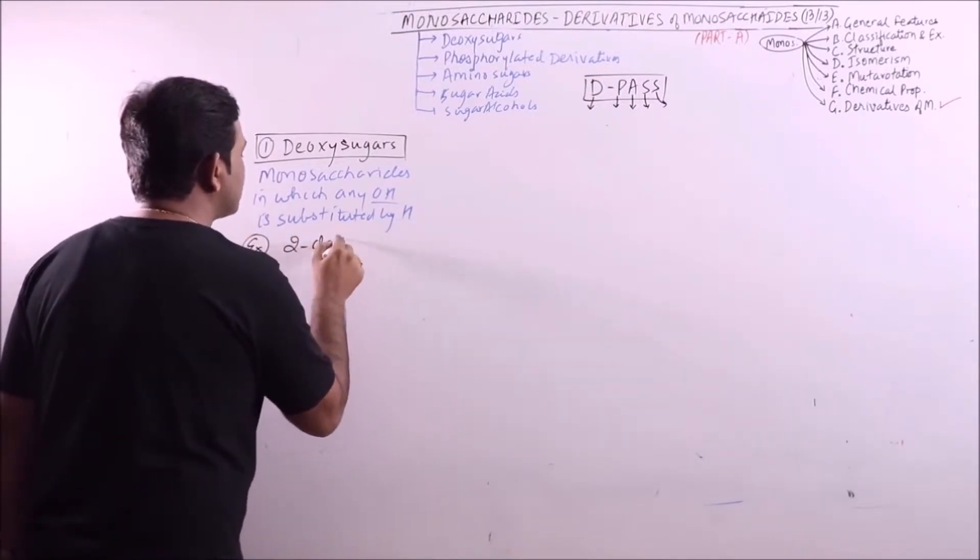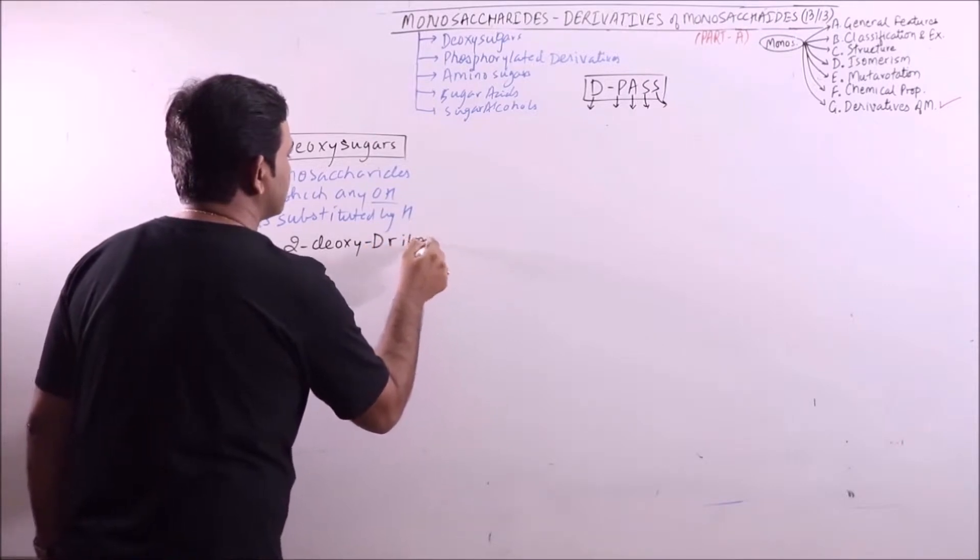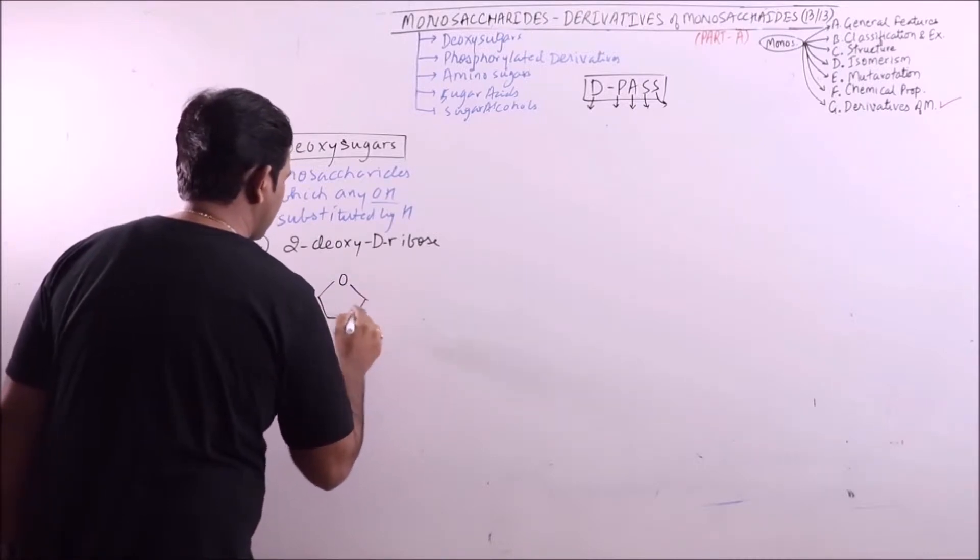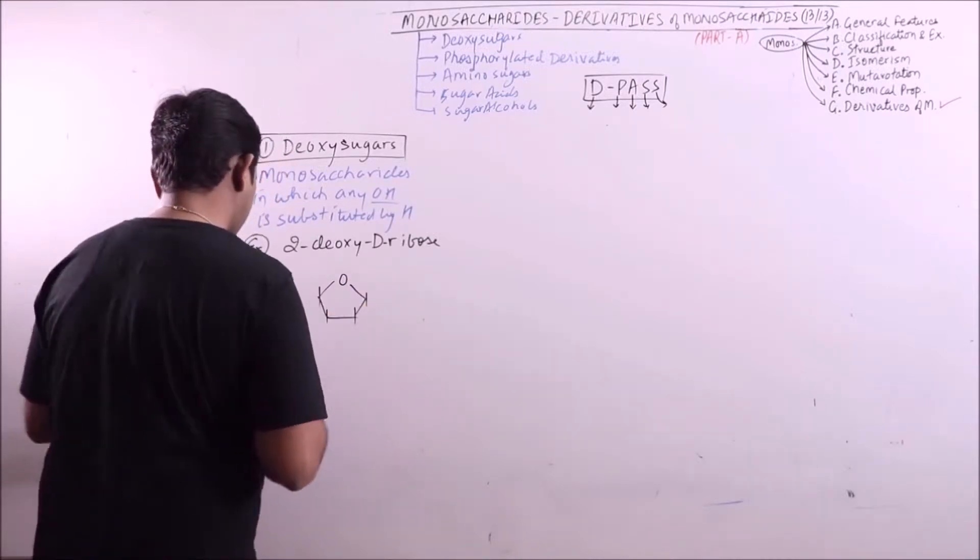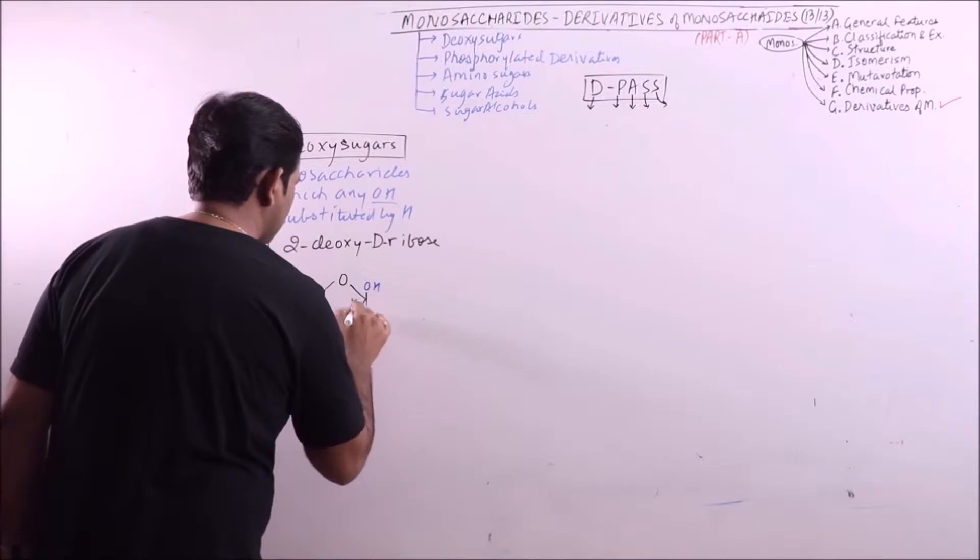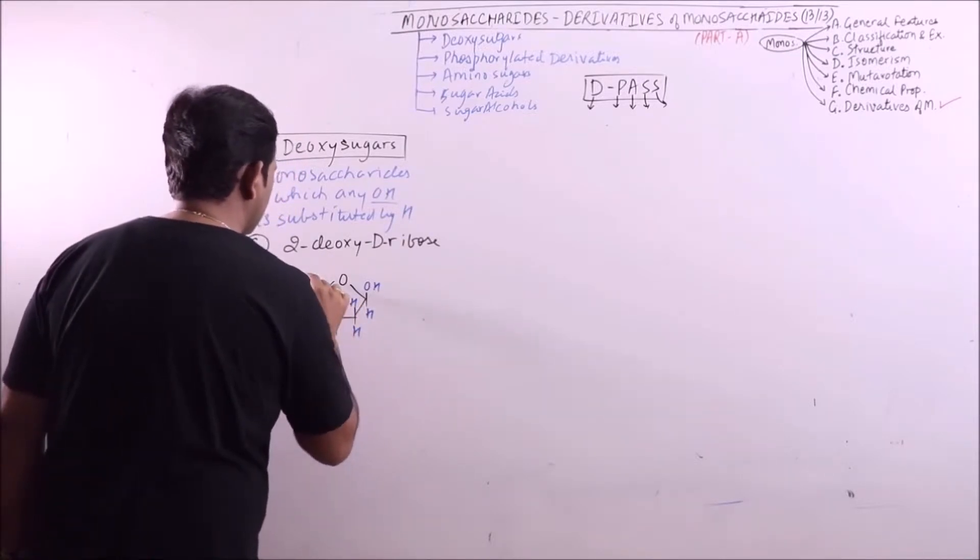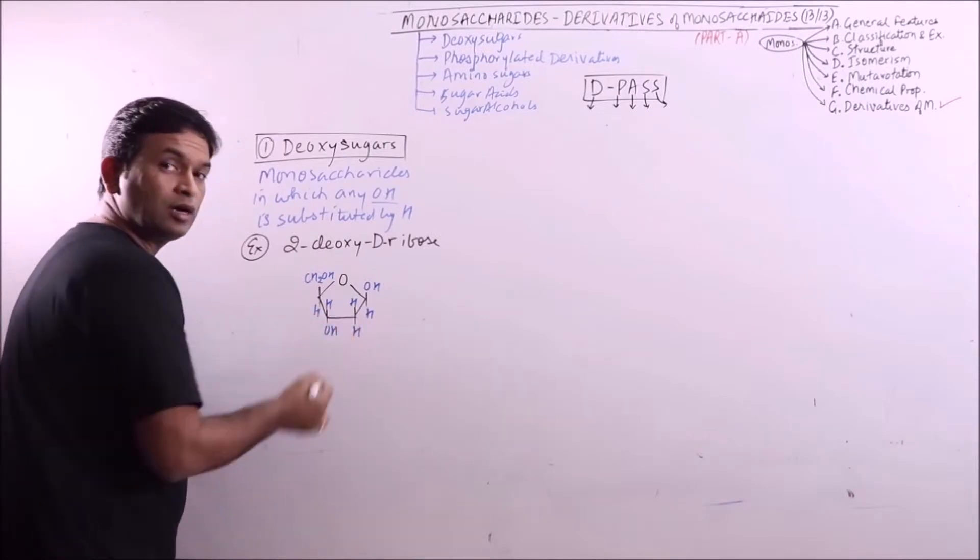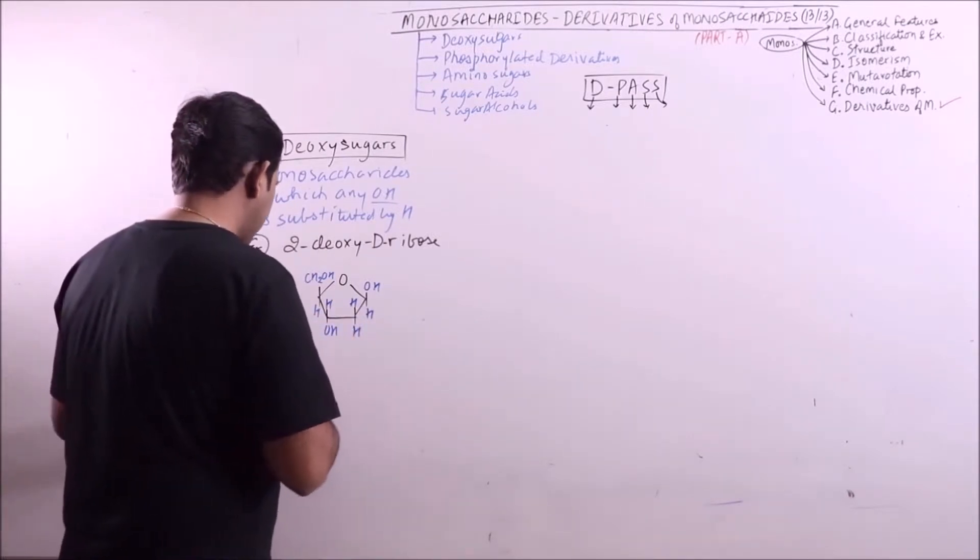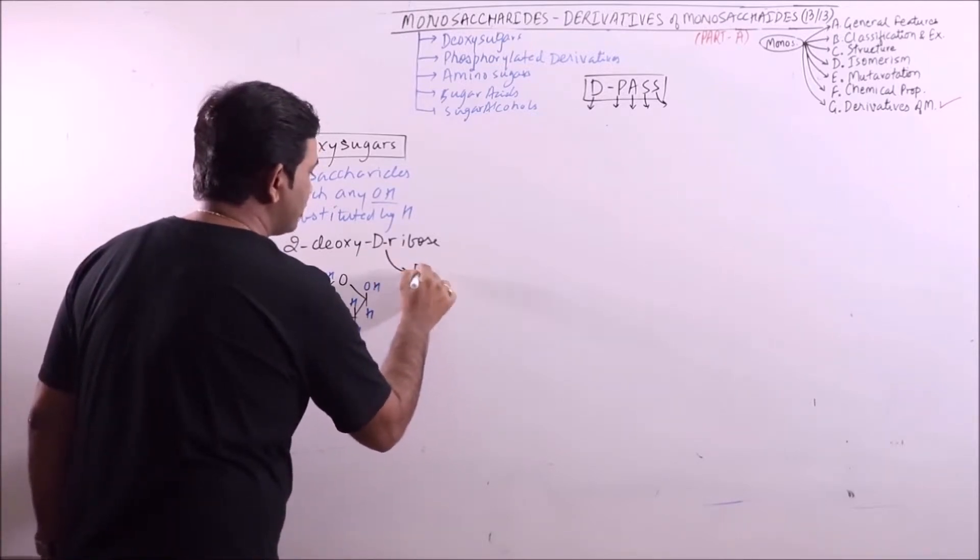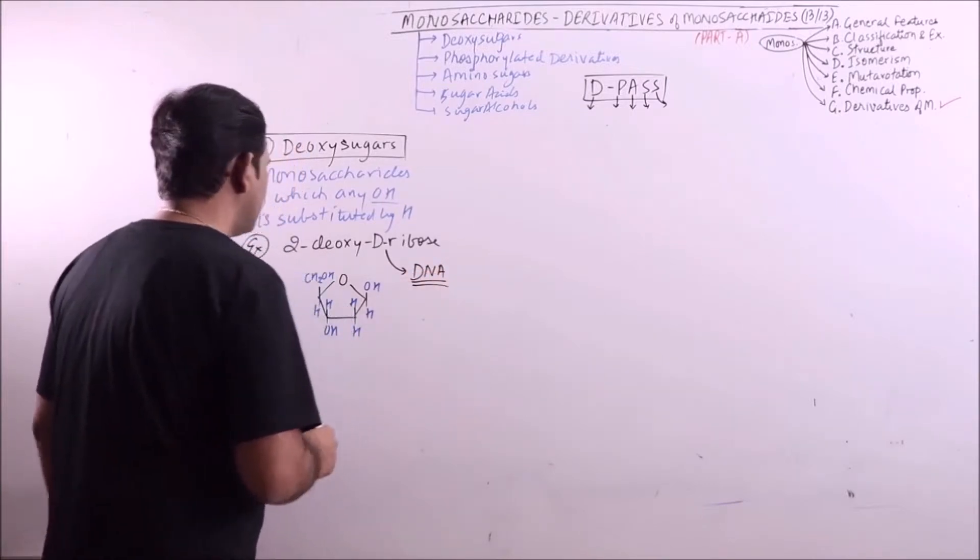For example, 2-deoxysugar. This is 2-deoxysugar. We can see that at carbon 2, the hydroxyl group is replaced by hydrogen. This is utilized or it is an important component of DNA, nucleic acid, genetic material.